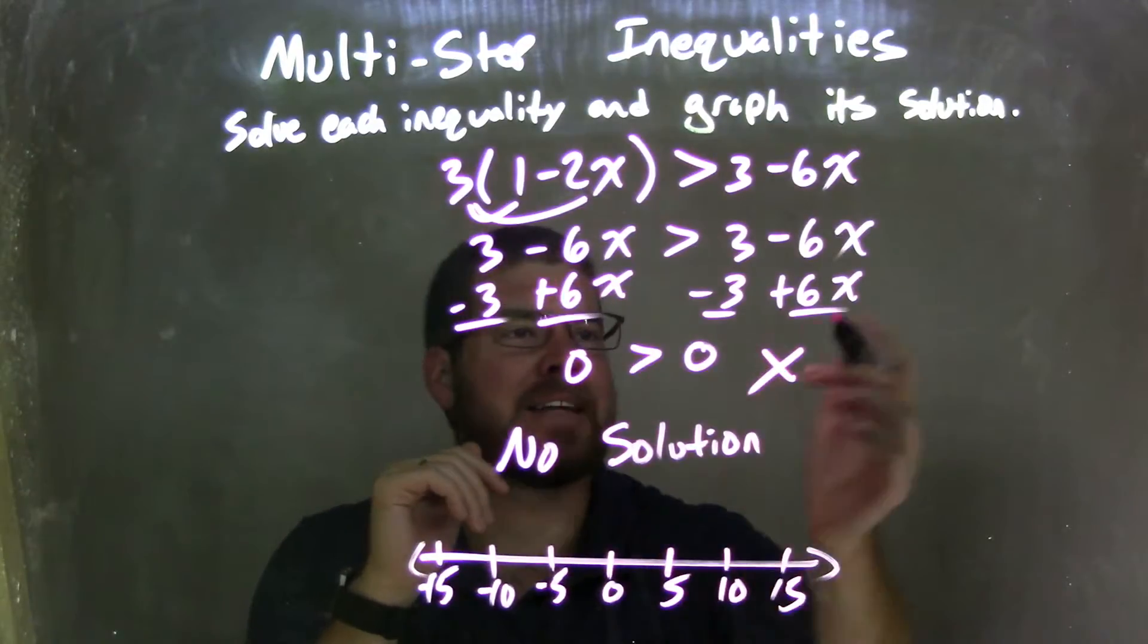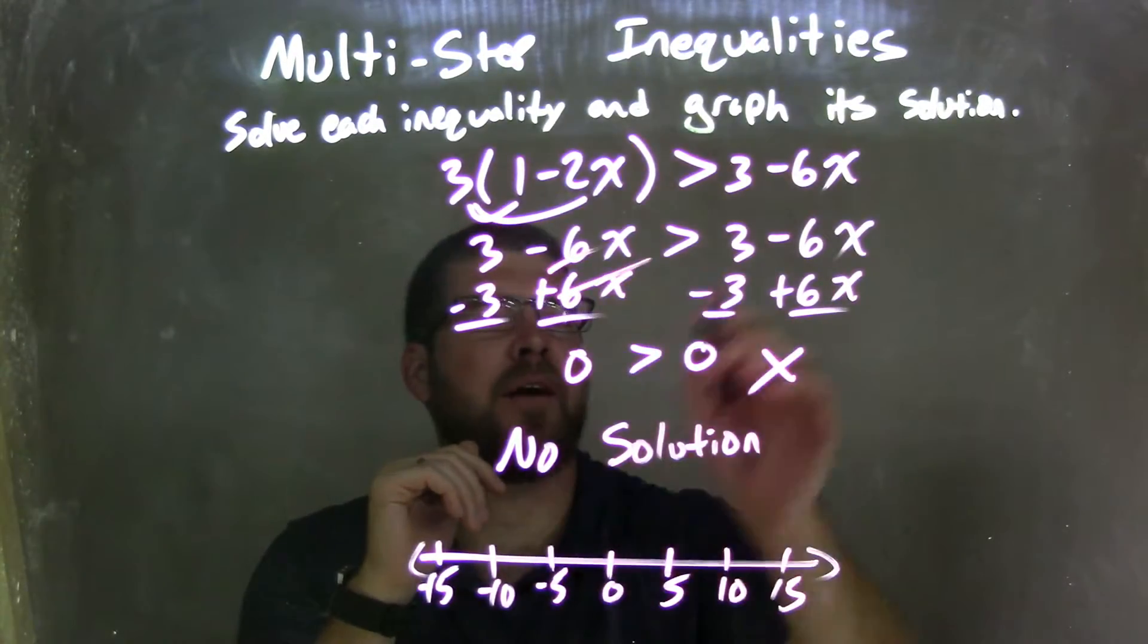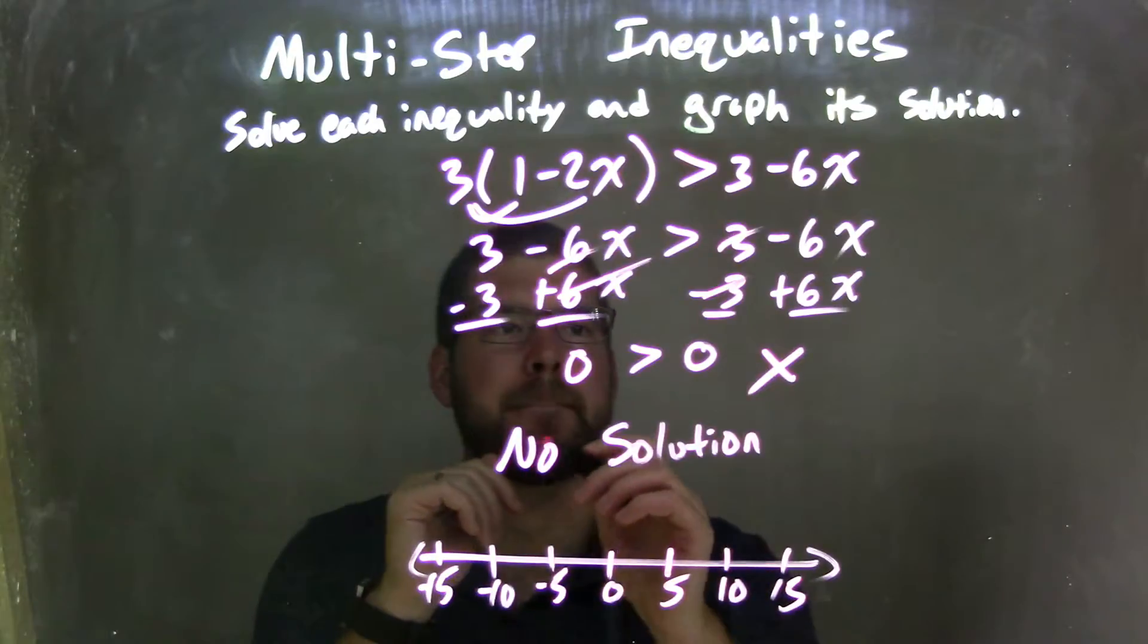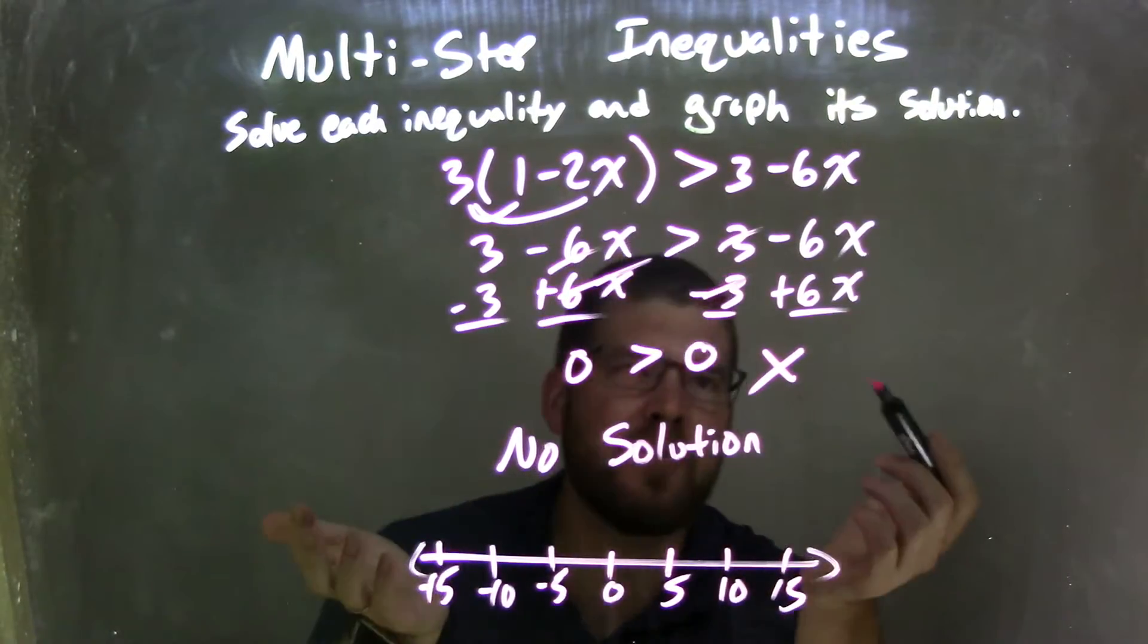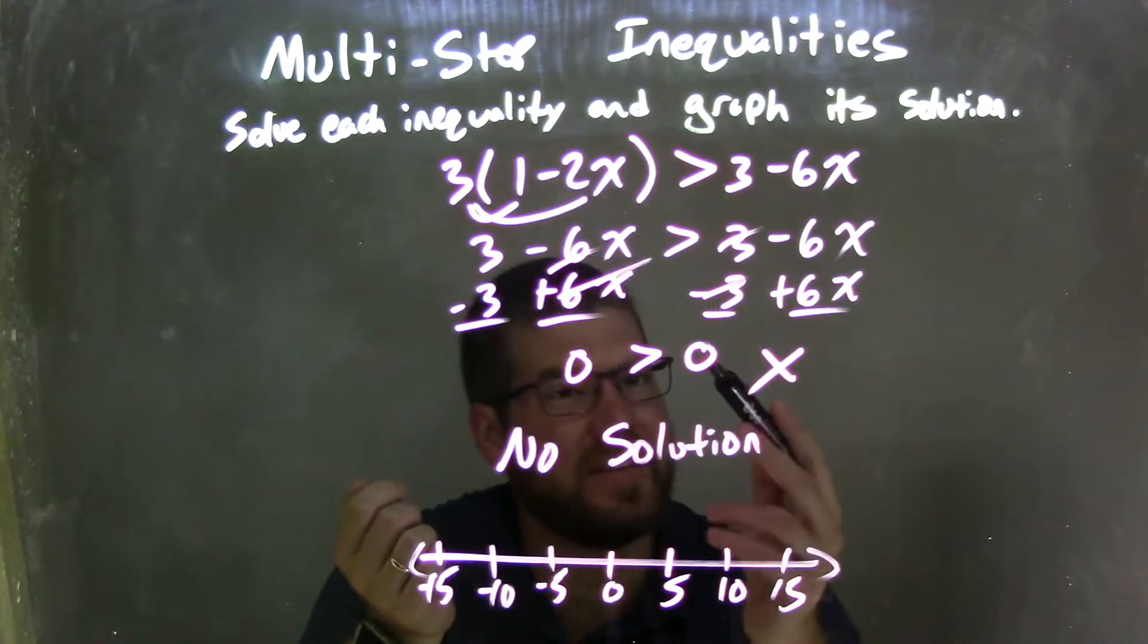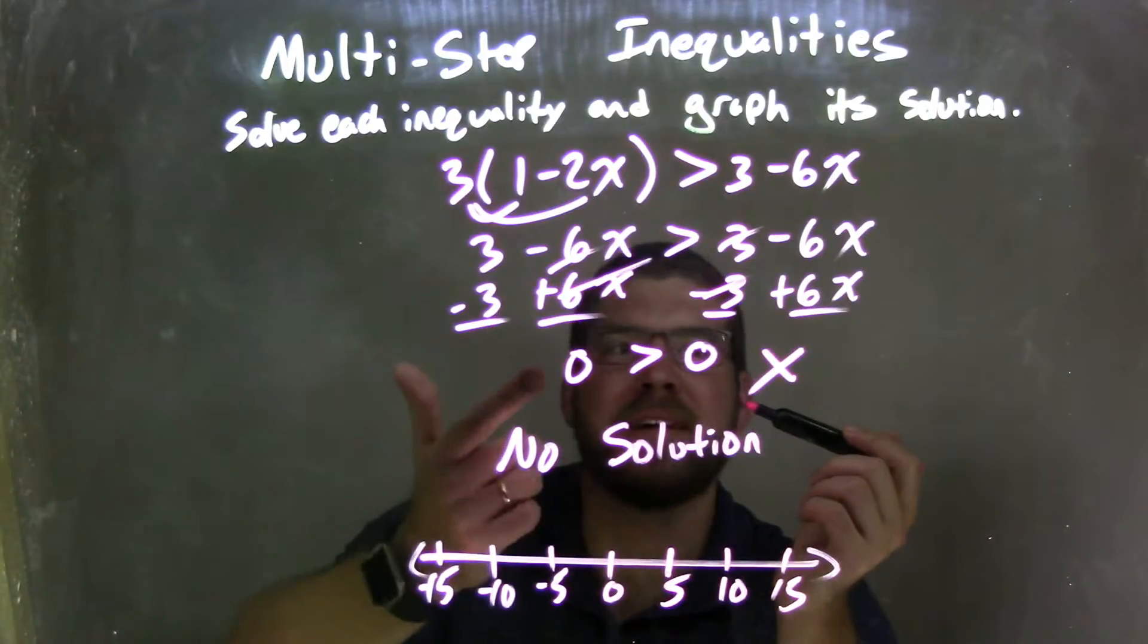Combined my like terms, I added a 6x to both sides, eliminating it there, and subtracted the 3 to both sides, eliminating it there. But then I ended up eliminating it both sides, right? Because negative 6x plus 6x is 0, and 3 minus 3 is 0.